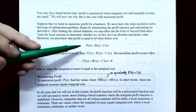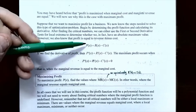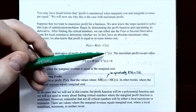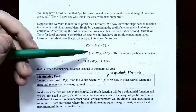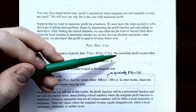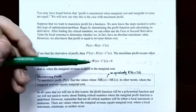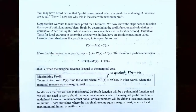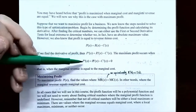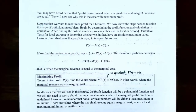We know that the profit function is revenue minus cost: P(x) = R(x) − C(x). If you take the derivative on both sides of the equation, you get P′(x) = R′(x) − C′(x). In other words, marginal profit equals marginal revenue minus marginal cost. We know that we have critical numbers whenever the marginal profit equals zero. Setting P′(x) = 0, we see that this occurs when R′(x) = C′(x) — that is, when marginal revenue equals marginal cost.